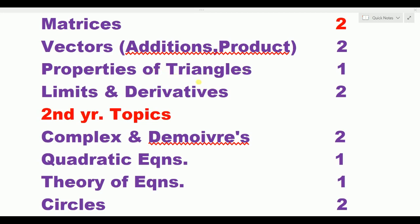Then, properties of triangles — in trigonometry, there are properties of triangles. That means minimum one day. Next topic: limits and derivatives — two days. There are also many questions on limits and derivatives. Properties of triangles also have three to four important questions. In order of reference: first topic — matrices, then vectors, then properties of triangles, then limits and derivatives.